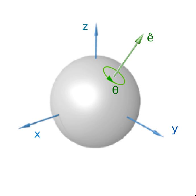Rotations in three-dimensional space differ from those in two dimensions in a number of important ways. Rotations in three dimensions are generally not commutative, so the order in which rotations are applied is important even about the same point. Also, unlike the two-dimensional case, a three-dimensional direct motion, in general position, is not a rotation but a screw operation.